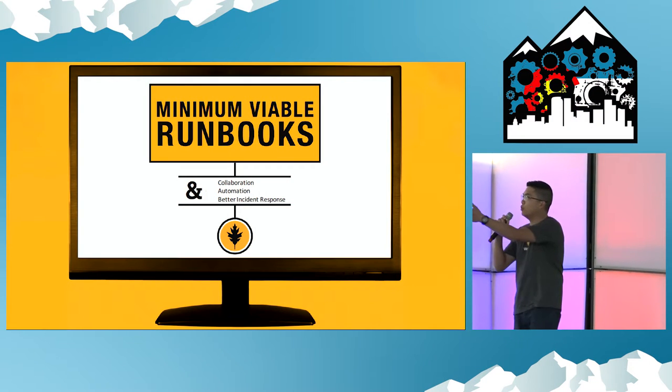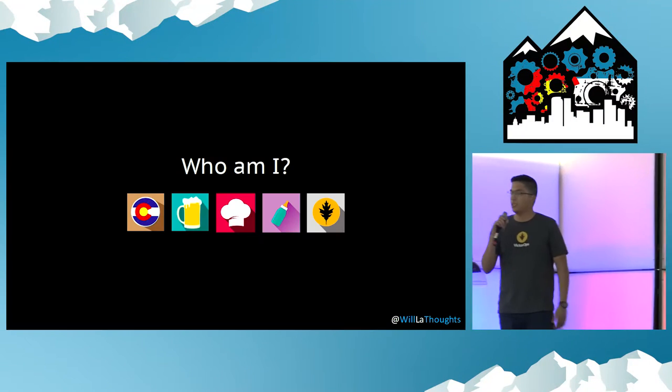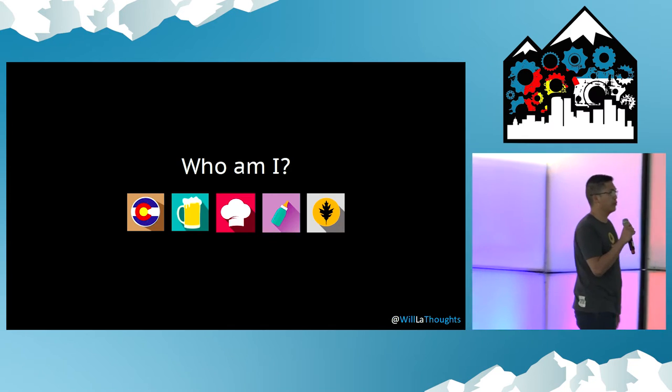Today I'm talking about Minimum Viable Runbooks, the idea that you could use collaboration and automation to improve your process.